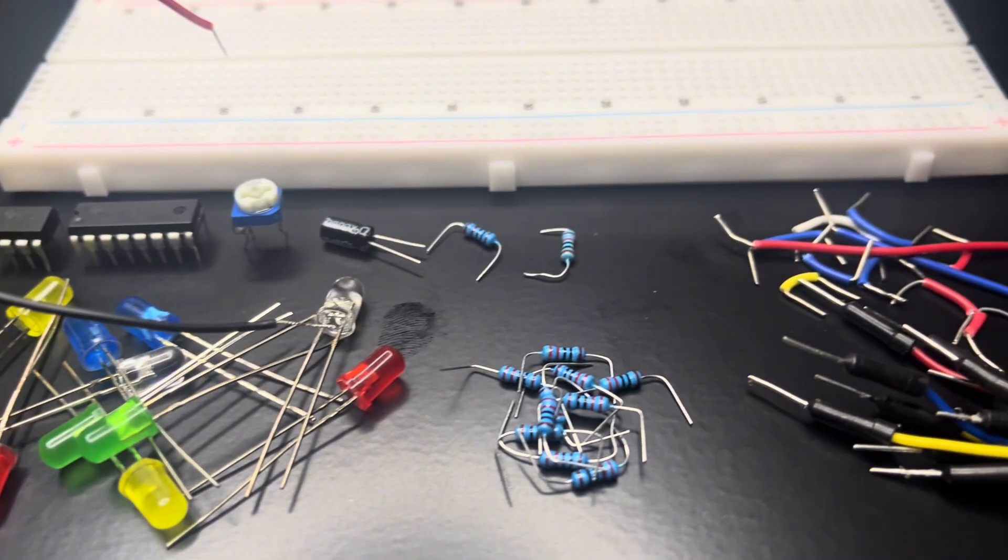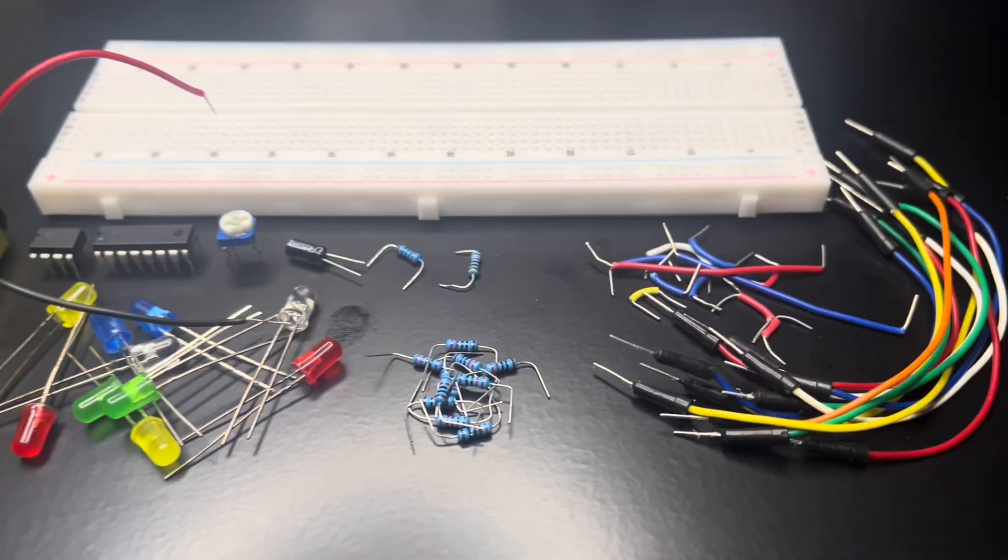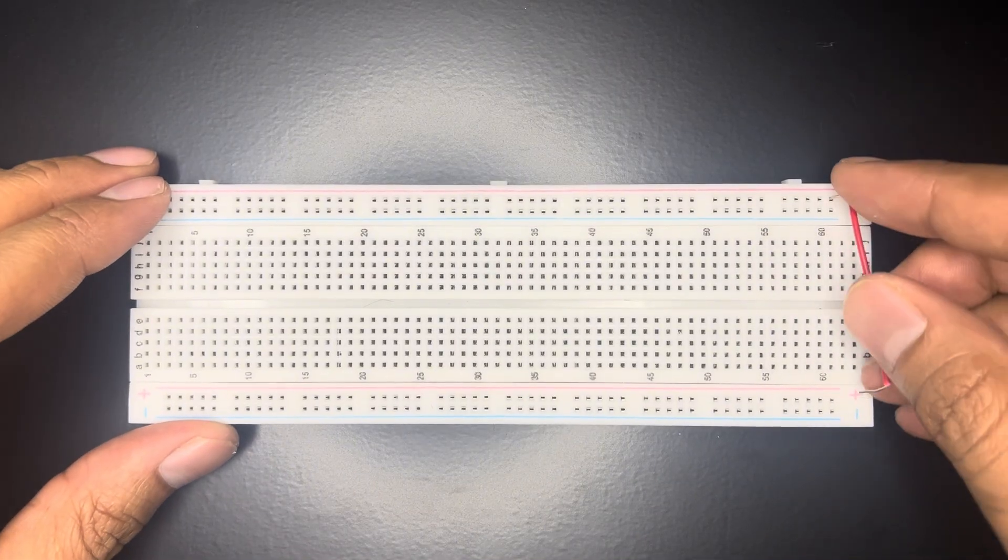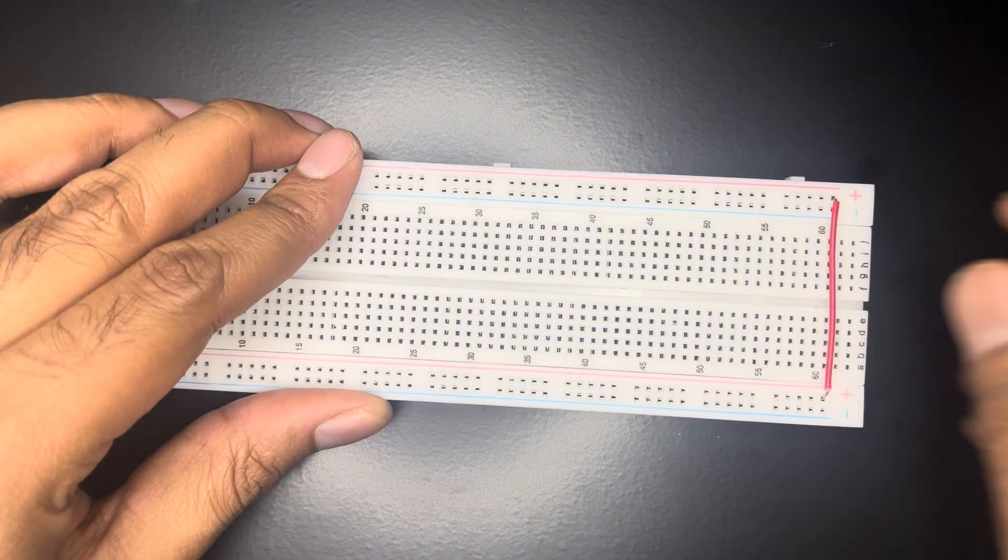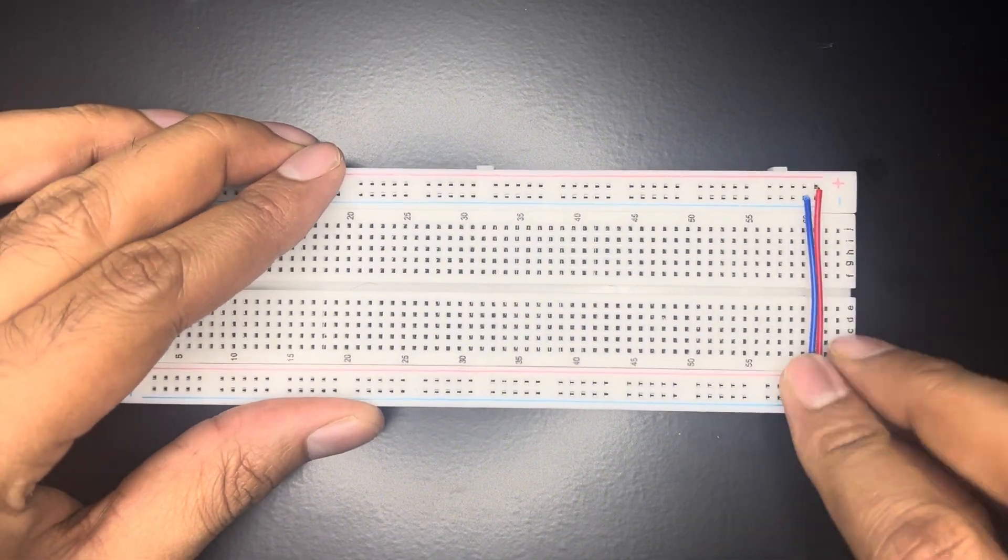Here all the components are ready, let's start building. Connect top and bottom power rails together. This will help us to get VCC and ground from both power rails.